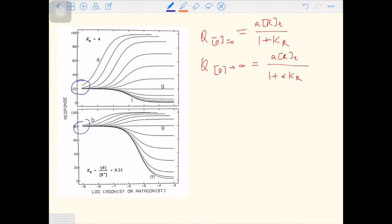Here and here are the constitutive activities, one of which is 20, the other of which is 80. The level of the constitutive activity is determined by KR, and KR is the ratio between R over R star. So on the top, when KR equals 4, R over R star is 4, and 20% of the total amount of receptor is in the active form, which causes the response.